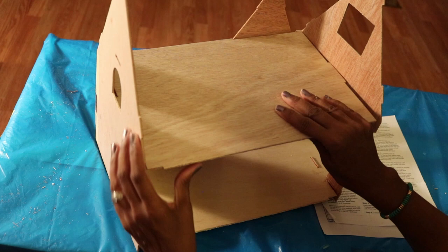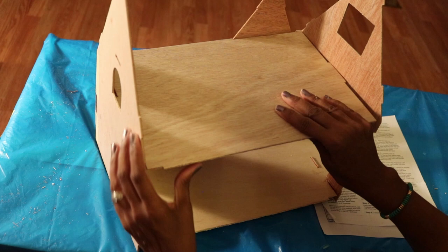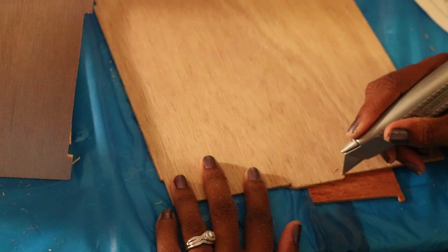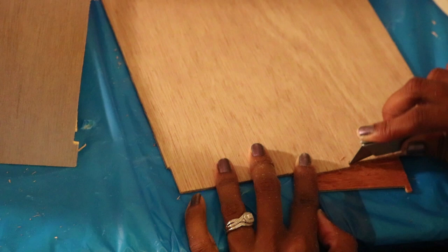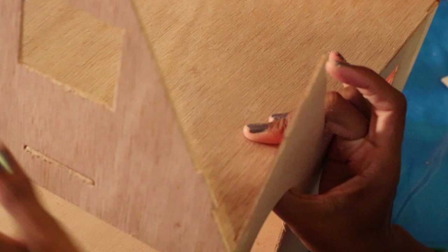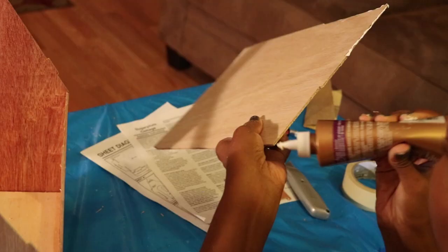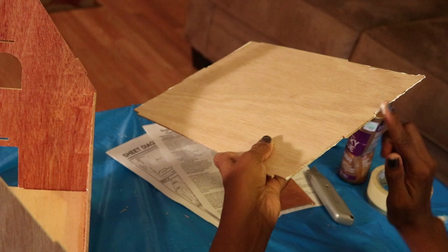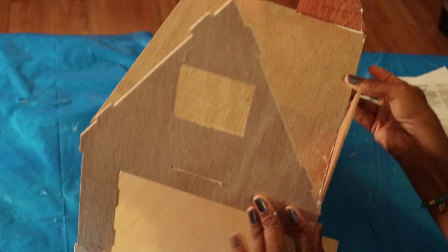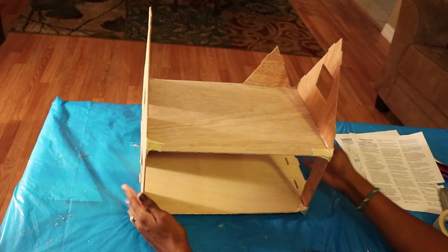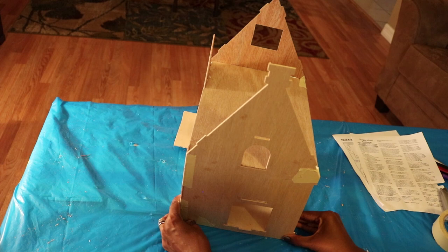Now I'm going to punch out and test fit the second floor. Again, there's a tab that doesn't want to play nice so I'll need to trim it with my utility knife. Now the floor fits perfectly so there will be no gaps and everything will be nice and square. Now I can add glue to the edges. Once the floor is in place, I add glue to the underside and clamp it securely with tape.